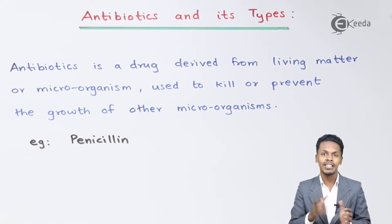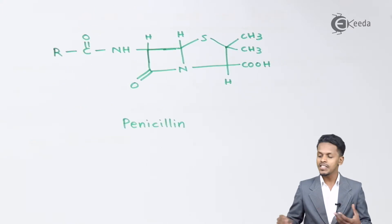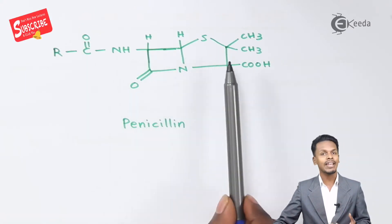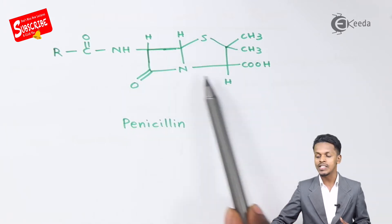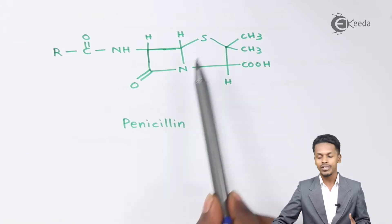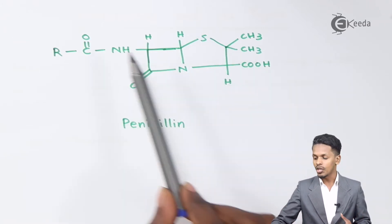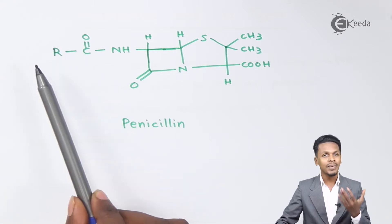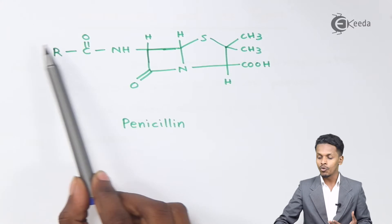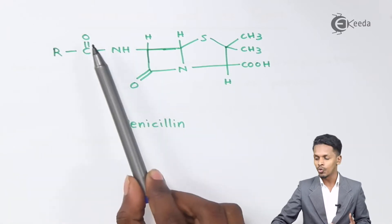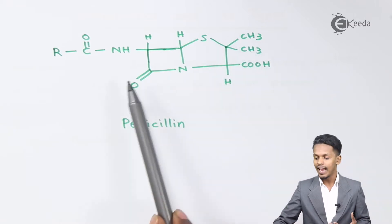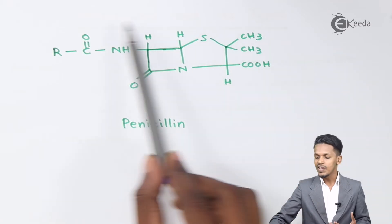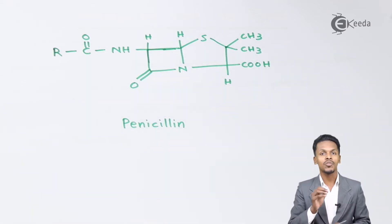Now let us look at the structure of penicillin. In this structure we can find two cyclic groups — a four-membered ring and a five-membered ring. The four-membered ring contains nitrogen, while the five-membered ring contains sulfur. There is also an R group, which could be methyl, ethyl, or another alkyl group attached to a C(O)NH amide group. Additionally, a carboxyl group is present, along with two methyl groups and a carbonyl group. This is the most important structure for the Chemistry in Everyday Life chapter.